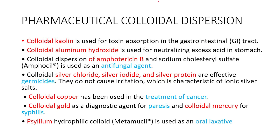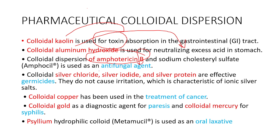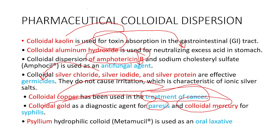Next, what are the different kinds of colloidal dispersions used in pharmacy? Colloidal kaolin acts as an anti-poison and eliminates poison from the body. Colloidal aluminium hydroxide acts as an antacid. Amphotericin B acts as an antifungal agent. Silver chloride, silver iodide, or silver protein act as germicides. Colloidal copper is used for the treatment of cancer. Colloidal gold can be used for parasitic conditions. Colloidal mercury can be used for syphilis. Psyllium hydrocolloid is used as an oral laxative.